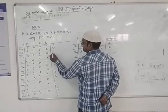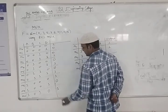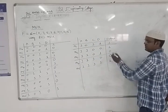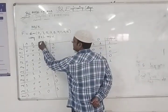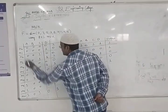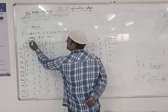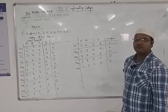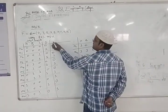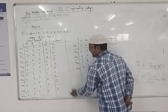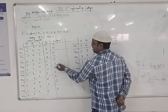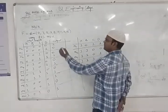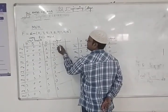The remaining values are zeros. Now I select A, B, C as the select inputs of the 8-to-1 MUX. Based upon D, I write the value for that particular function. By looking at the output, I determine the input values for the 8-to-1 multiplexer.